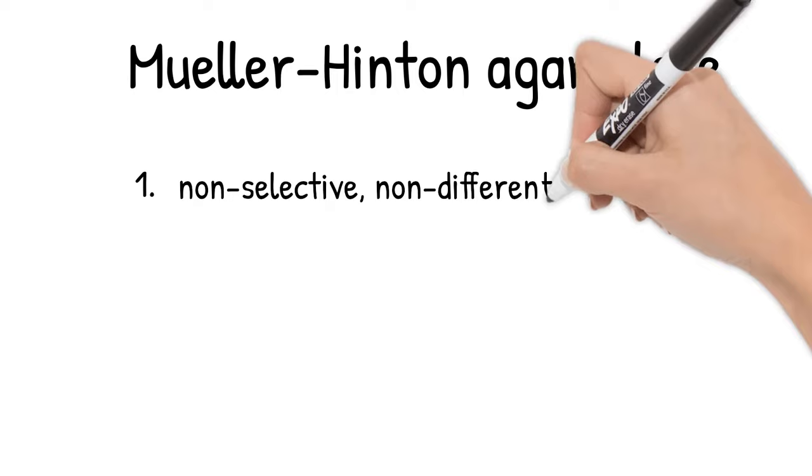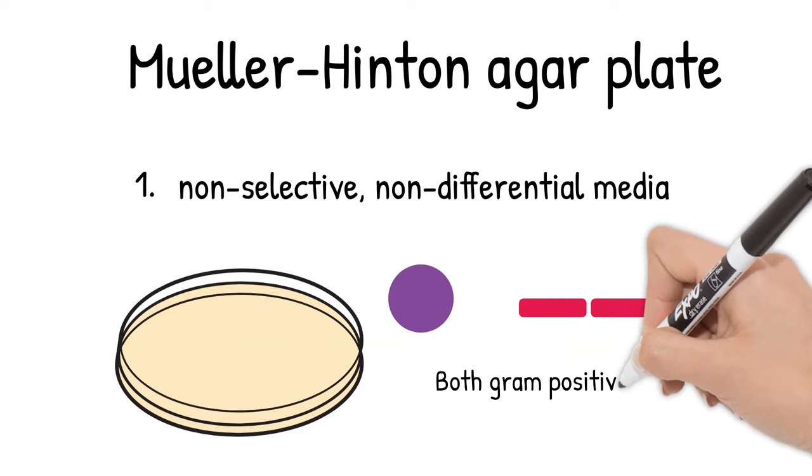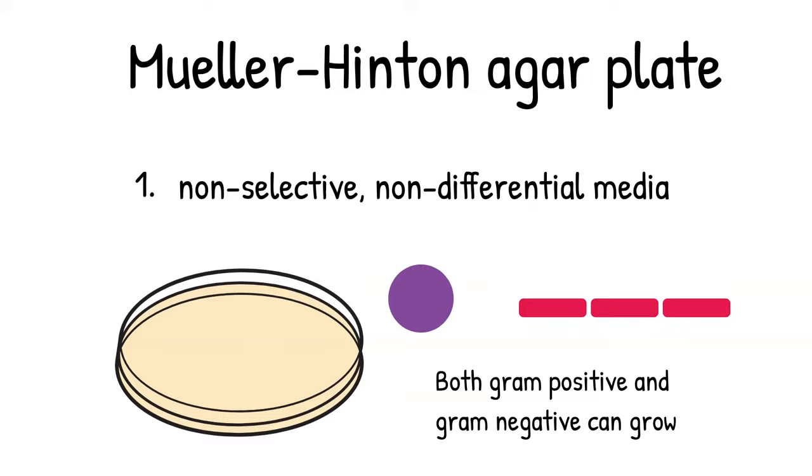First, Mueller-Hinton agar is a non-selective, non-differential media. Since it is non-selective, most of the organisms will grow on this plate. This way, we will not have bias when the zone of inhibition is measured.